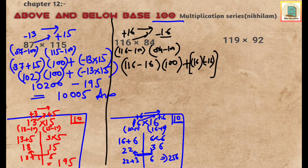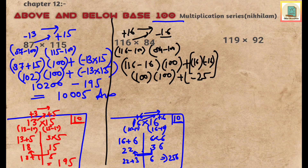So 116 minus 16 gives 100 multiplied by 100 equals 10000, and 16 multiplied by minus 16 gives minus 256. So 10000 minus 256 gives 9744 as the answer.